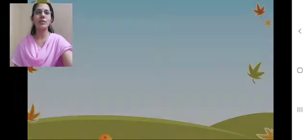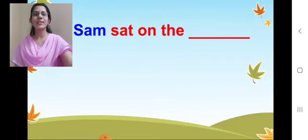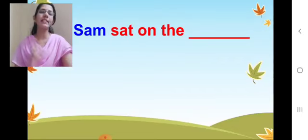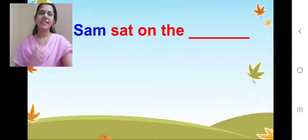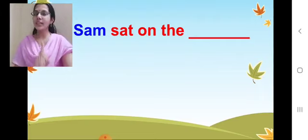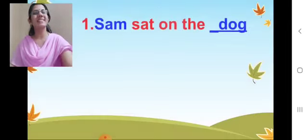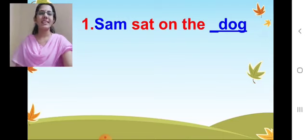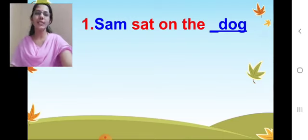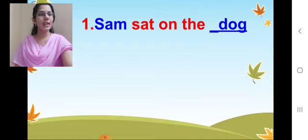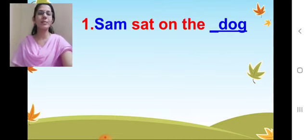So please cross out Pat and write Sam. Sam only sat, correct? Sam sat on the dog. Very nice children. Very good. Sam sat on the dog — so now it's clear. Done. Very good. Shall we move on?